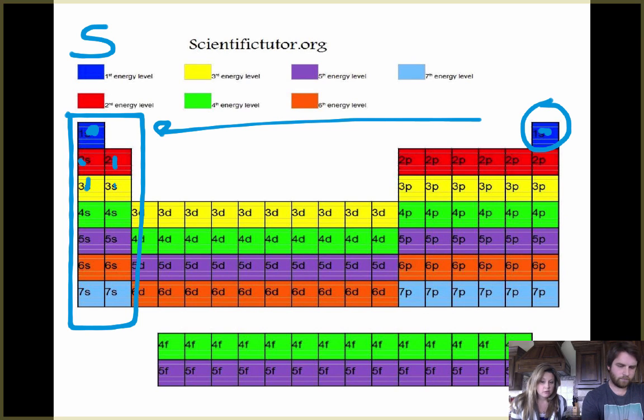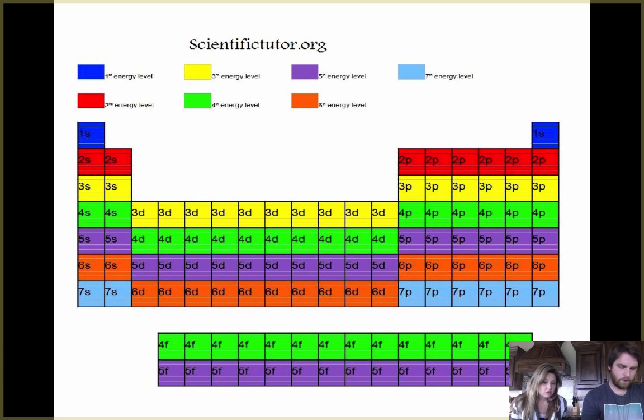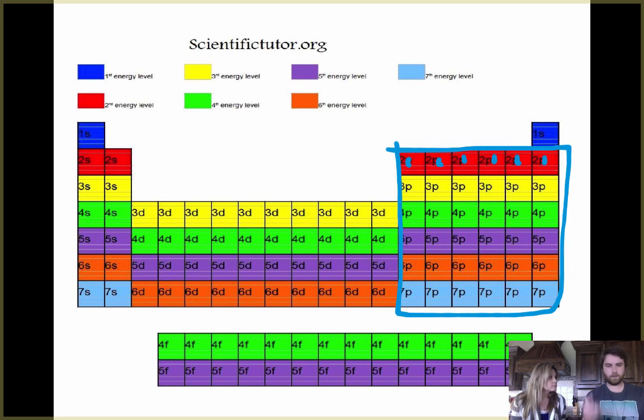So then we also have P, which if you count is six. So it's still following the same pattern. So right here, everything except for that, we got one, two, three, four, five, six across. P orbital has six electrons.